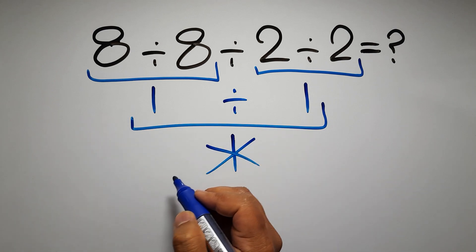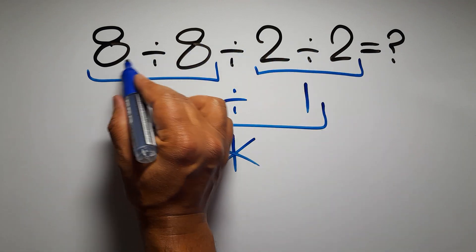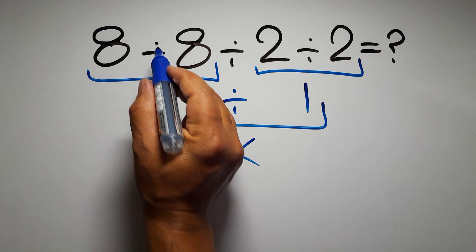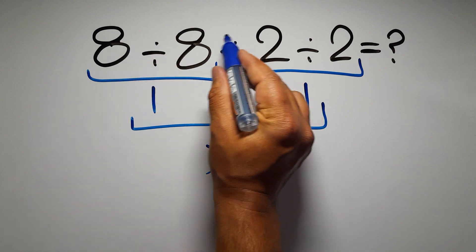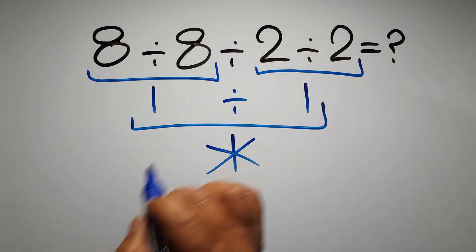Because according to the order of operations, when we have more than one division in an expression, we have to work from left to right. So here first we have to do this division, then this division, and finally this division. If we do this division before this division, it is wrong.